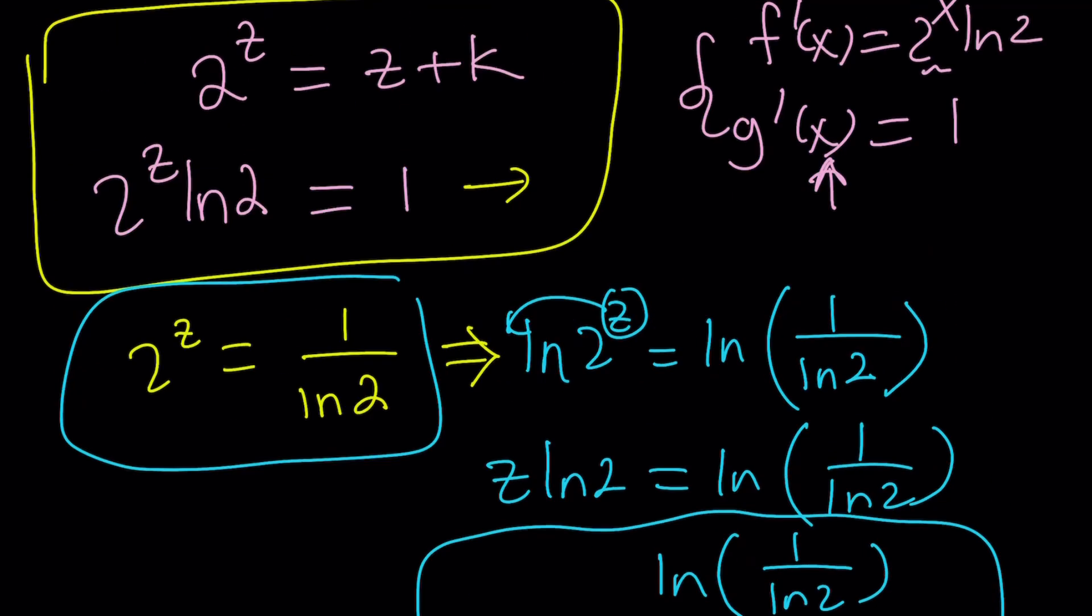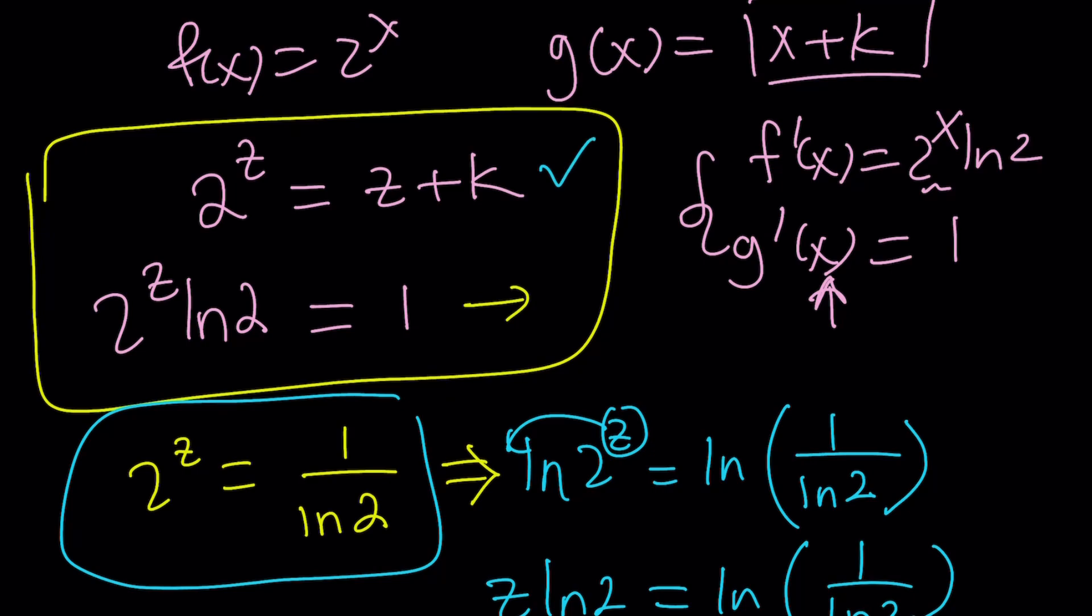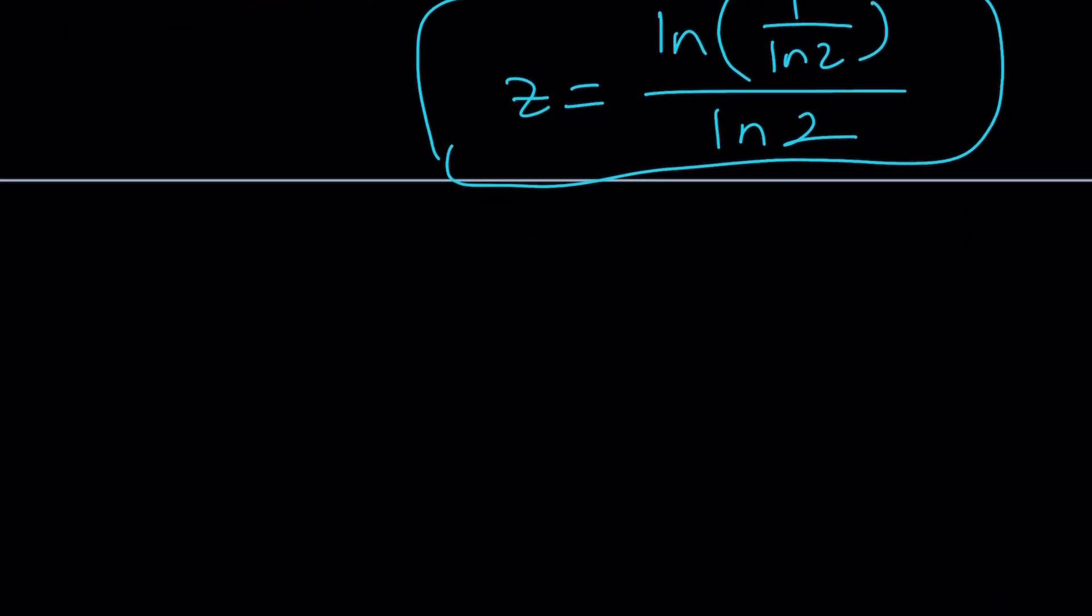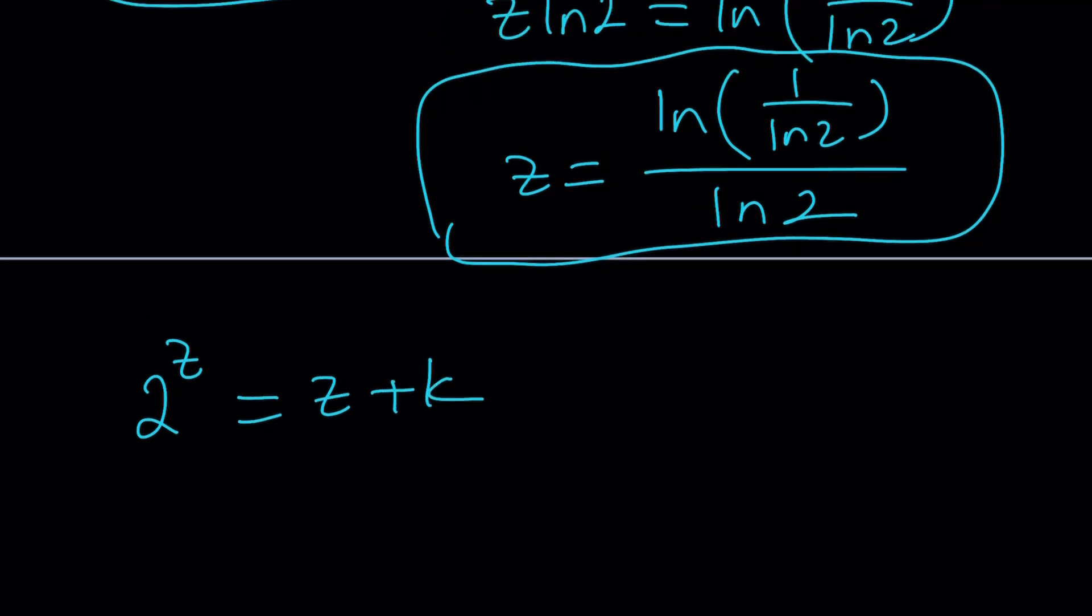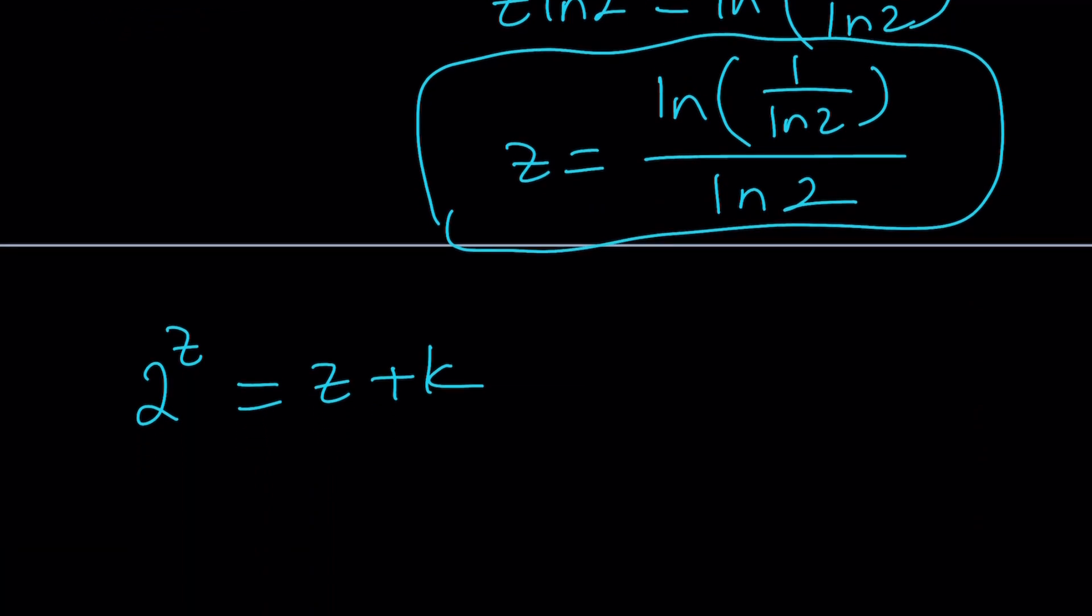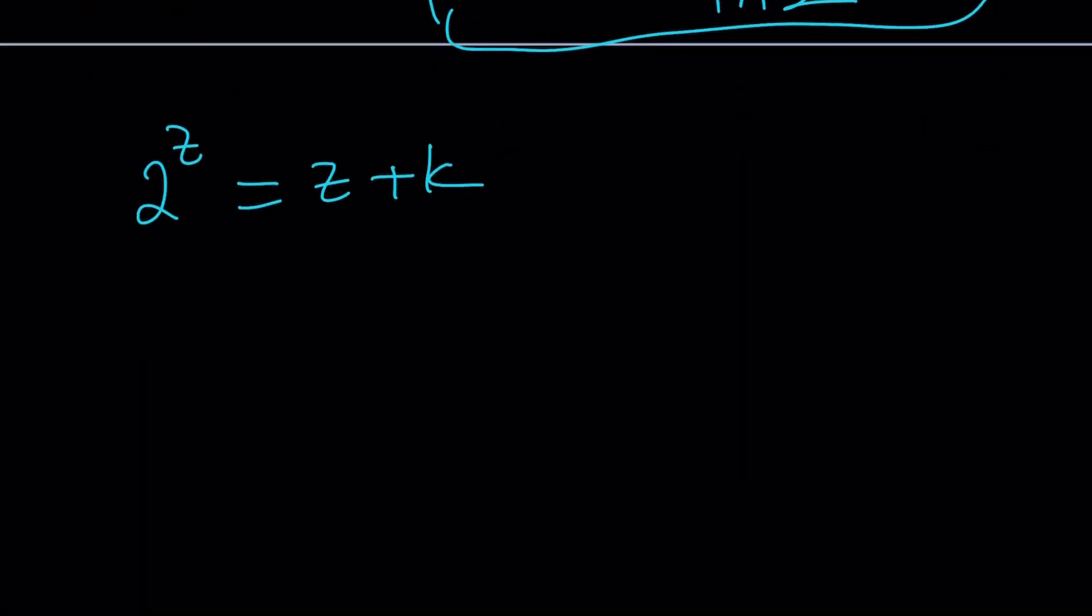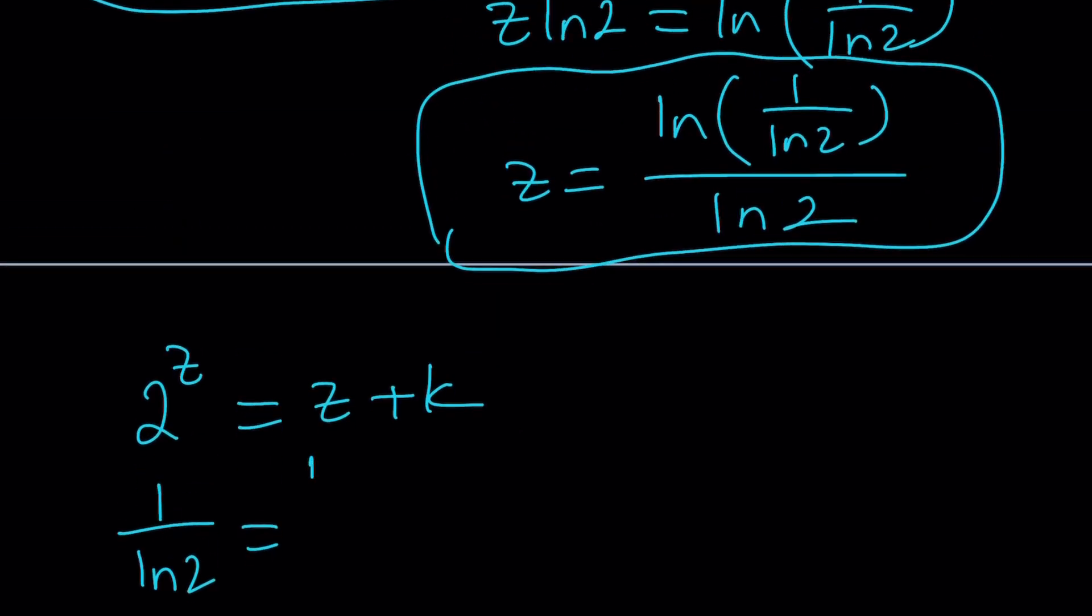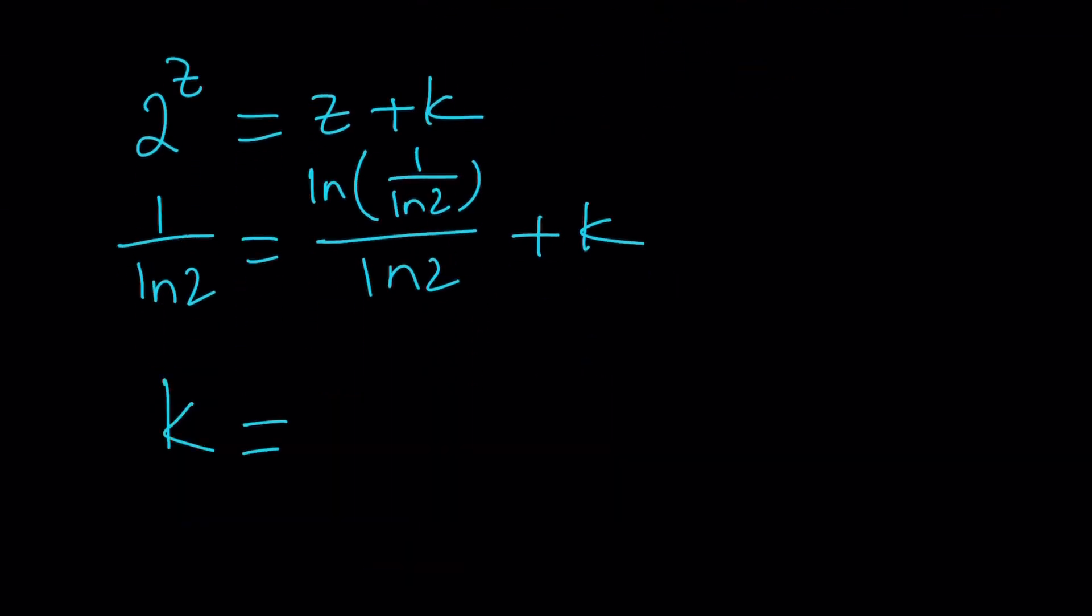Now, why do I need both? Because we have to put them together here. 2 to the z equals z plus k. 2 to the z equals z plus k from the first equation and or I shouldn't say first, but from the functions themselves. And now I'm going to replace 2 to the z with one over ln 2 and z with this gigantic logarithmic expression. And guess what? You can find the k value from here for which this equation has a single solution.